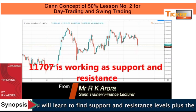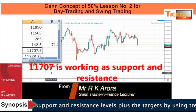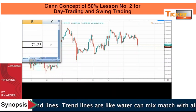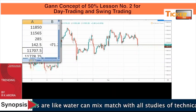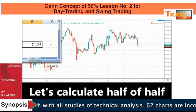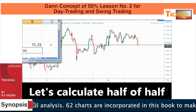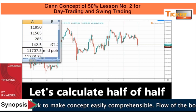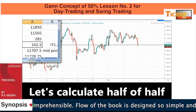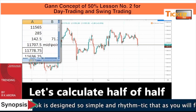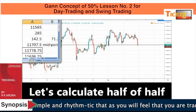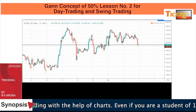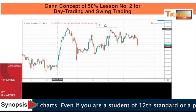Now let's take out the target also. The target would be: we will take half of 142.50, which is 71.25. We will add this 71.25 to the midpoint. The midpoint is 11,707.50. If we add 71.25 to it, we get 11,778.75 — so this is our resistance at 11,779.